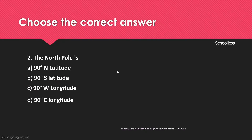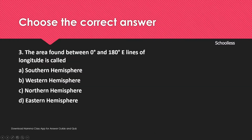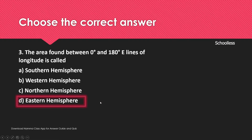The north pole is represented as N at 90 degrees north latitude. The area found between 0 degrees and 180 degrees east in the lines of longitude is called the eastern hemisphere — option D.